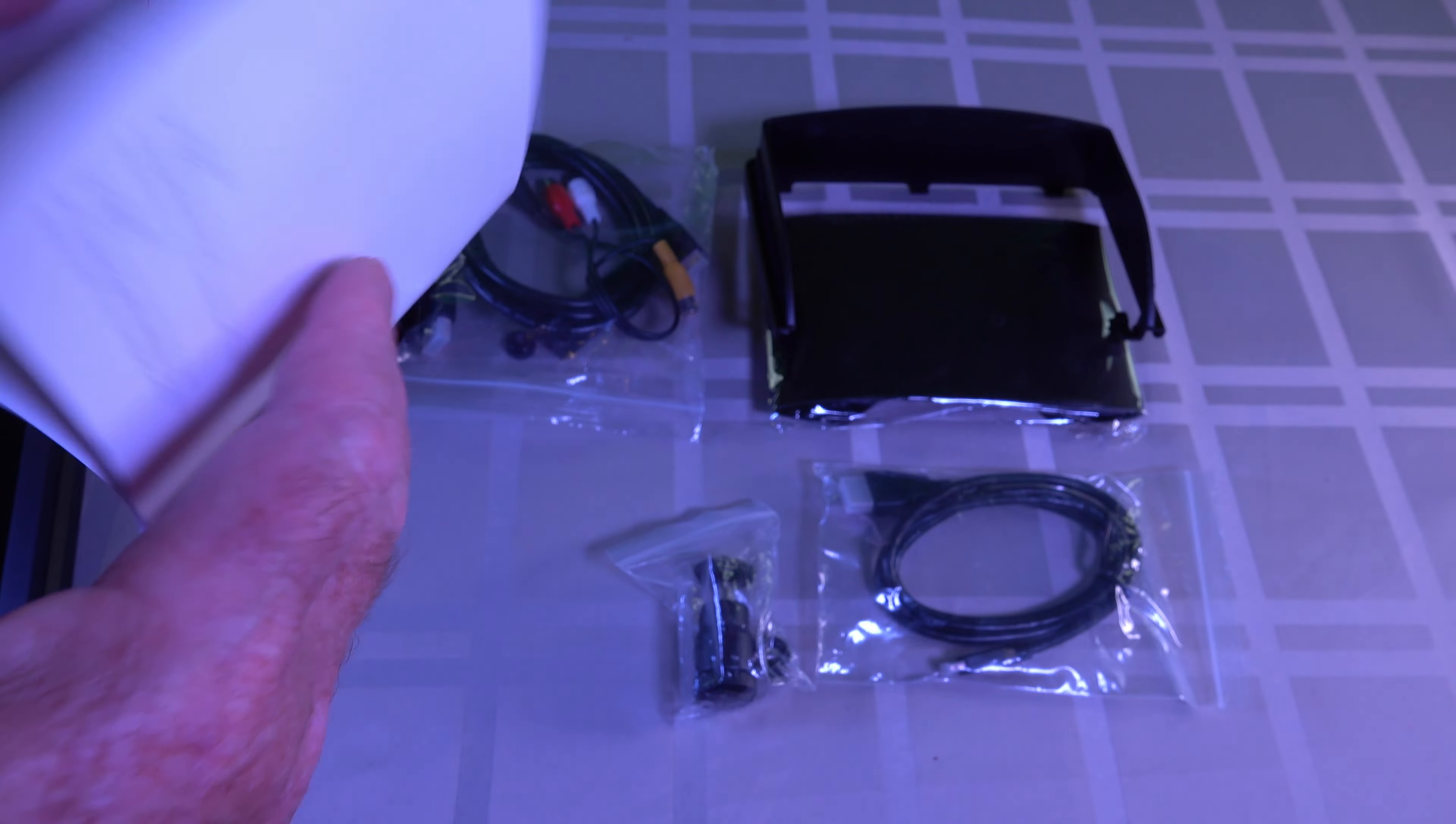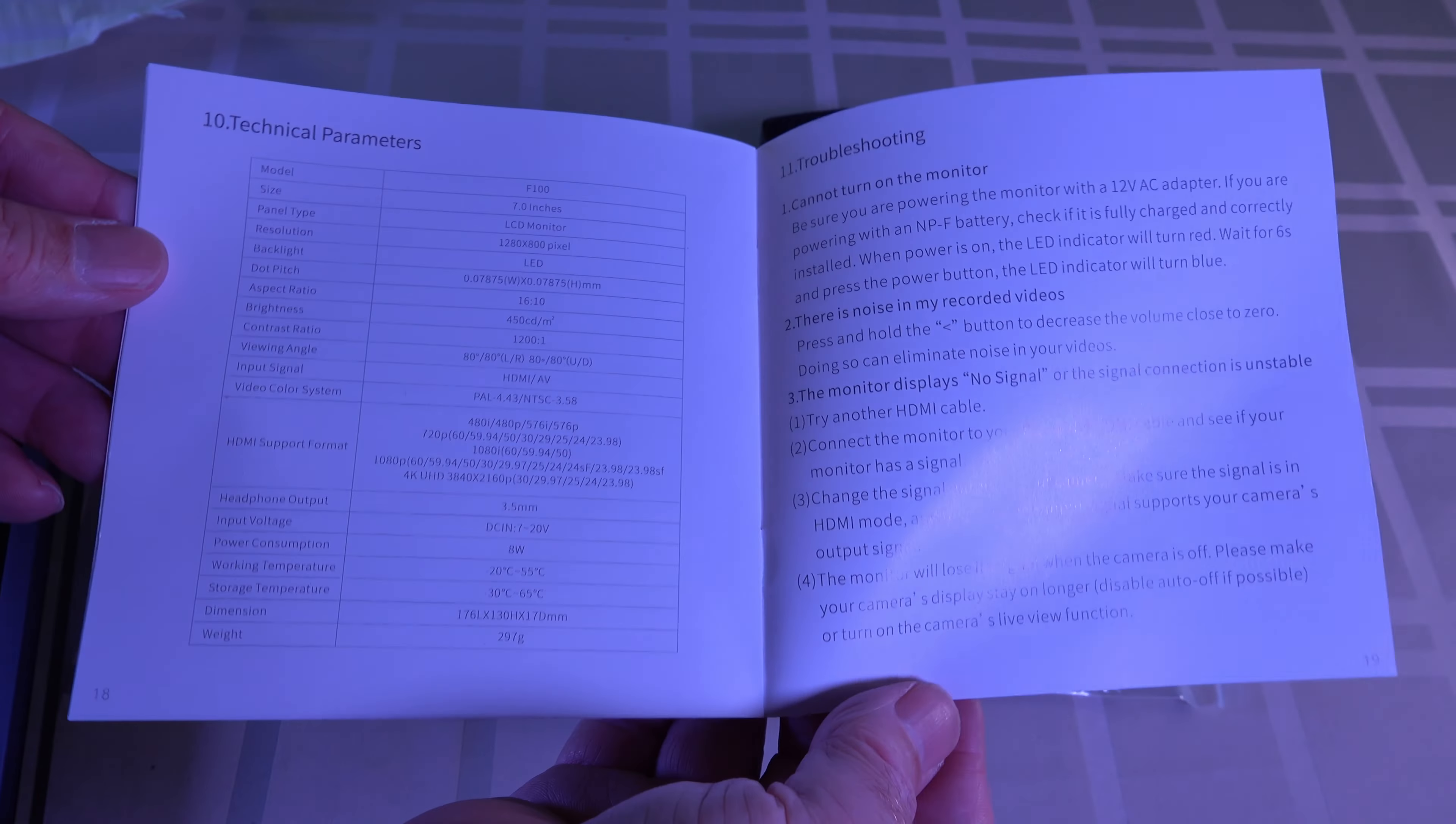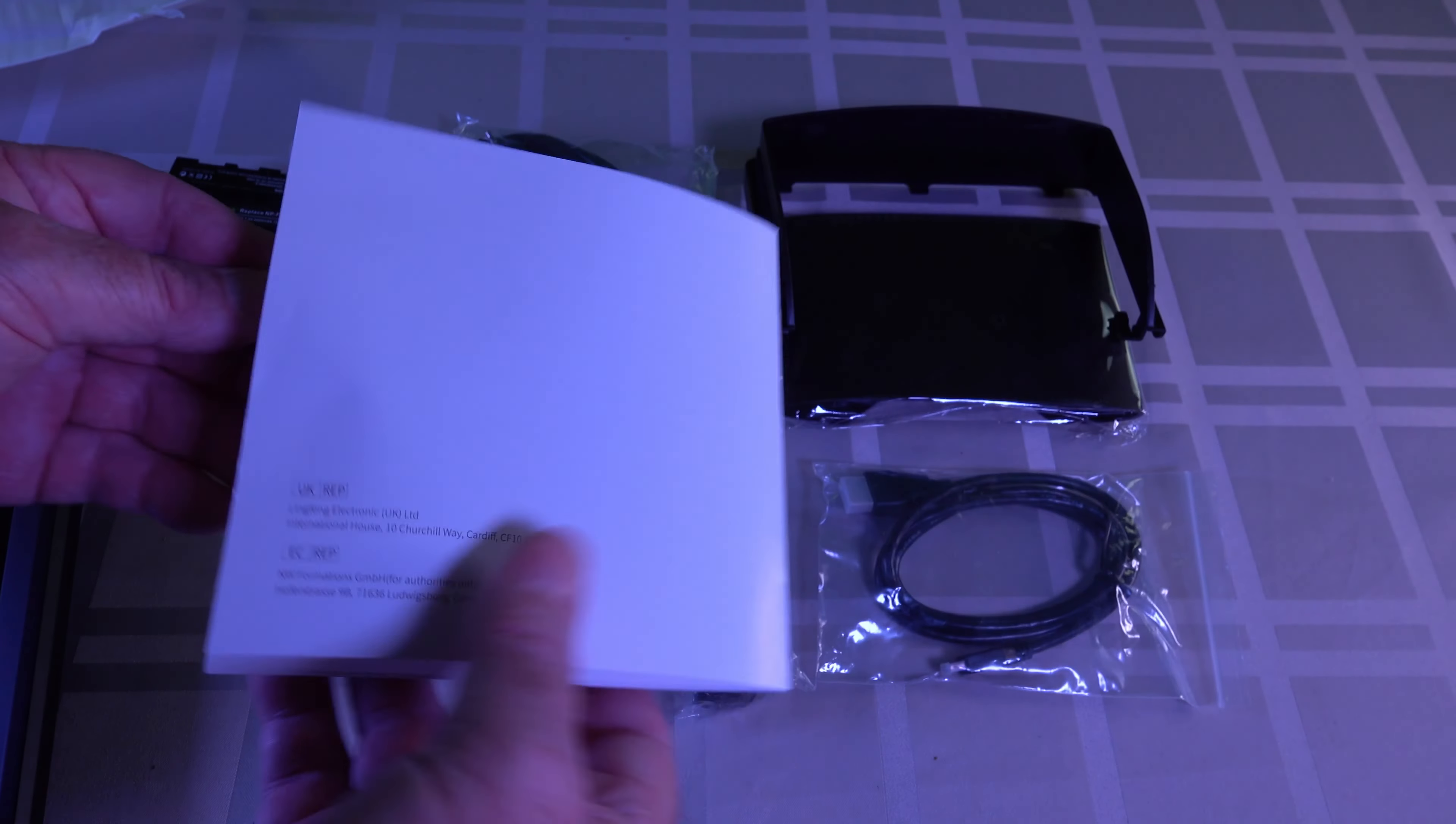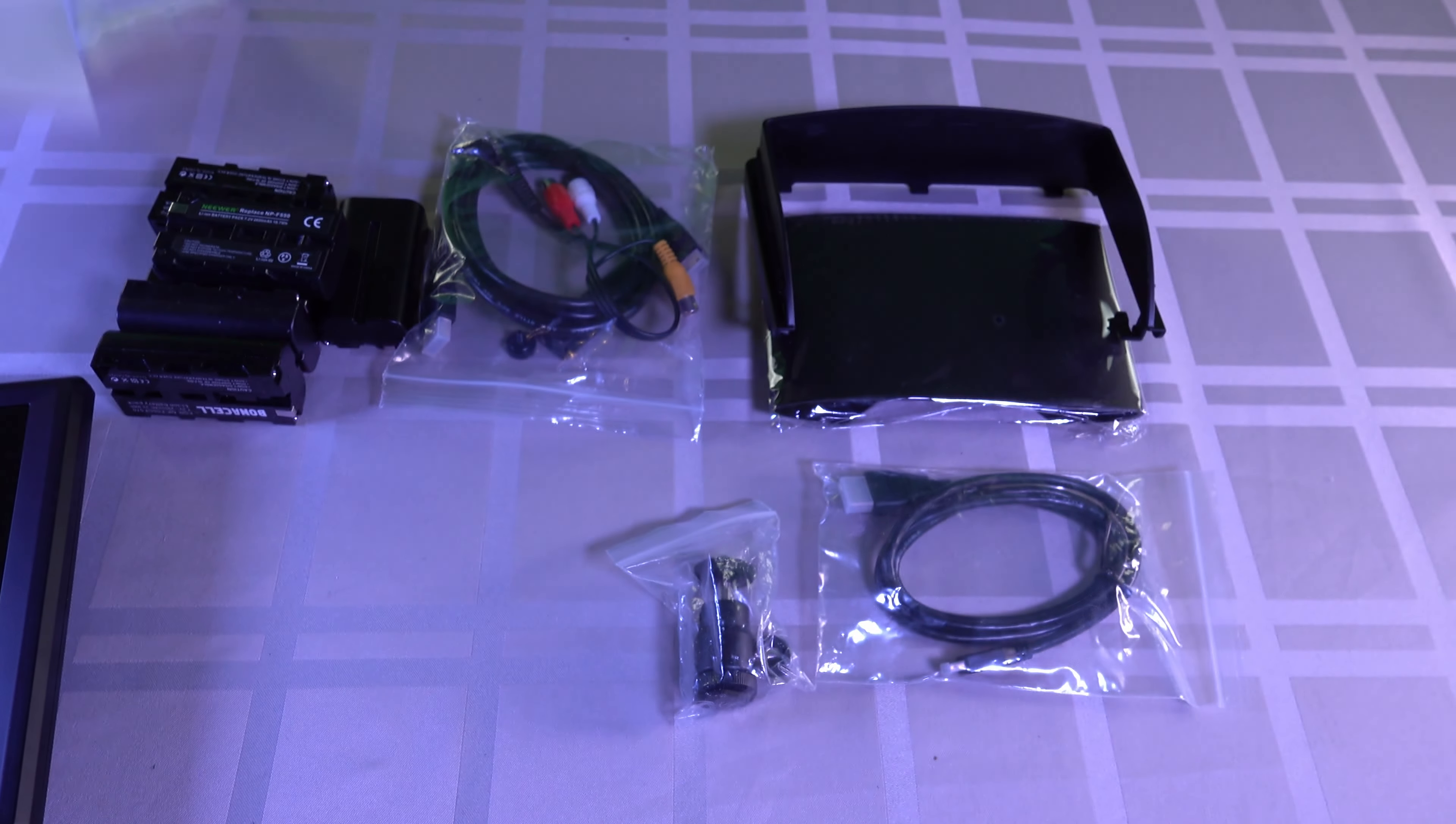I chose the Neewer LCD monitor, the seven inch one, because it seems to fit my needs and I've already got batteries. There is a later model than this one that actually has an internal battery you can charge, but I've got plenty of batteries so I didn't worry about it. I've gone for the cheaper model, the older one, and that's this.